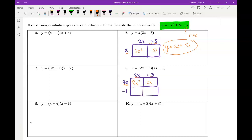When I multiply this 4x with the 3, I get 12x. When we multiply our 2x with the negative 1, we get negative 2x. And then 3 times negative 1 is negative 3.